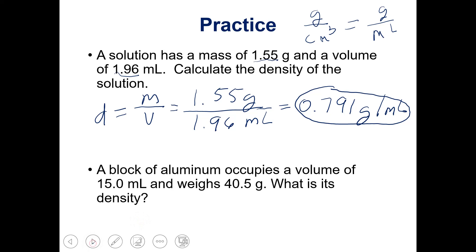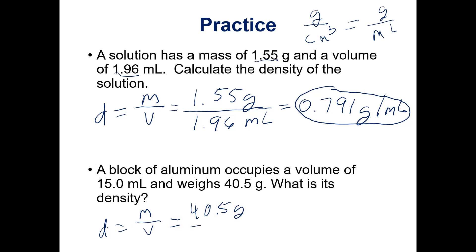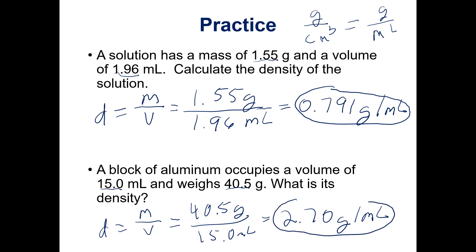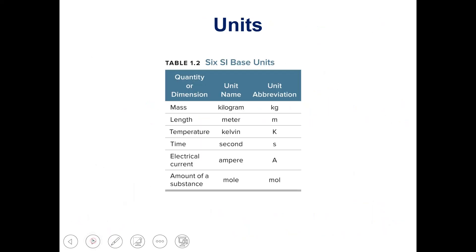Let's take a look at another example. A block of aluminum occupies a volume of 15 milliliters and weighs 40.5 grams — what is its density? If we take mass over volume we have 40.5 grams divided by 15 milliliters, and you should come up with 2.70 grams per milliliter. We have three significant figures in 40.5, so we round off to three significant figures.